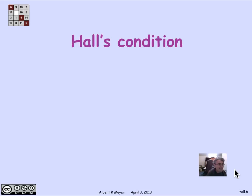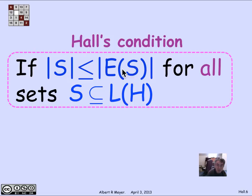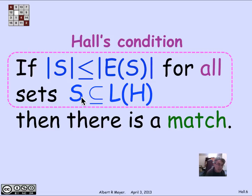We can state the no-bottleneck condition — Hall's condition — as follows: if the size of S is less than or equal to its image under the edges for every set S of left vertices of H, that's Hall's condition. If Hall's condition holds, then there is a match. This is a precise statement of Hall's theorem, with no boys and girls mentioned.